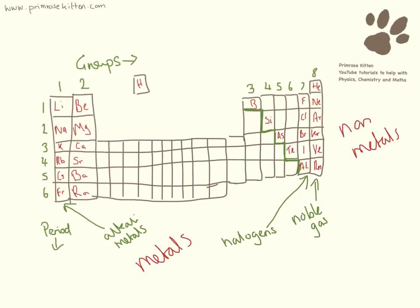Some of these groups have special names. Group eight are the noble gases — helium, neon, argon. These ones here are the halogens, and these ones over here are the alkali metals. Things that are grouped together have similar properties, so if I know how lithium and sodium react, I can predict how potassium reacts. The ones in the middle here are transition metals — there are quite a lot of those, and they behave like traditional metals.